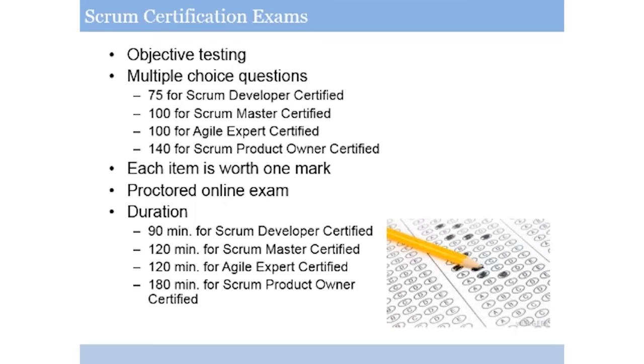There are a number of different Scrum certification exams available. The Scrum certification exams are objective tests that test your ability to utilize and adopt the Scrum practices. The Scrum examinations are multiple-choice examinations, and there are differing numbers of questions for the different tests, from 75 for the Scrum Developer Certified exam up through 140 questions for the Scrum Product Owner Certified exam. On each of the examinations, each question is worth one mark, and there's no guessing penalty. Your exam will be proctored online, and the duration of the examination differs depending upon which of the exams you're taking.